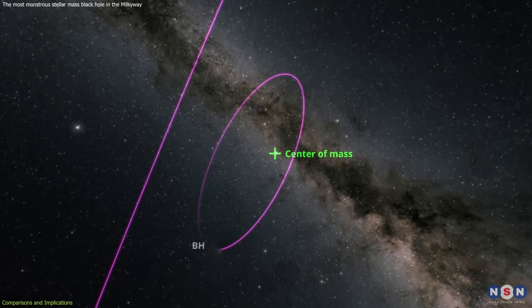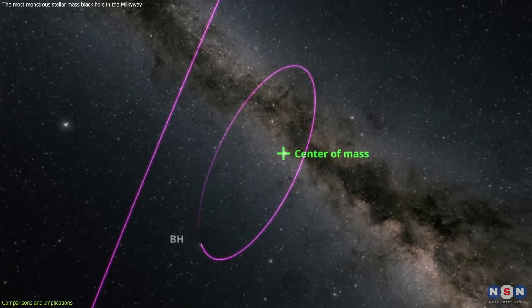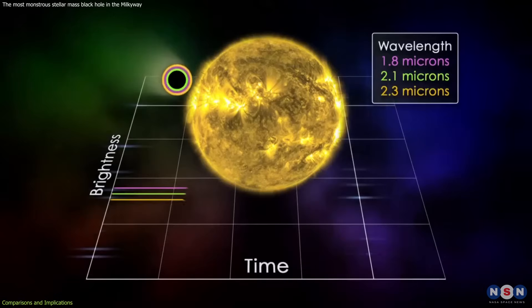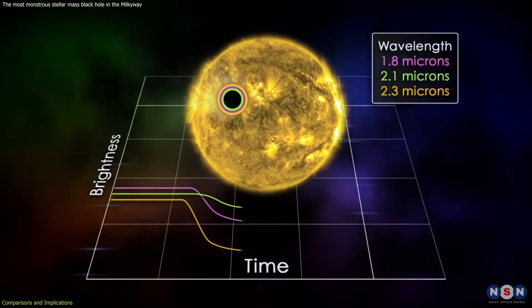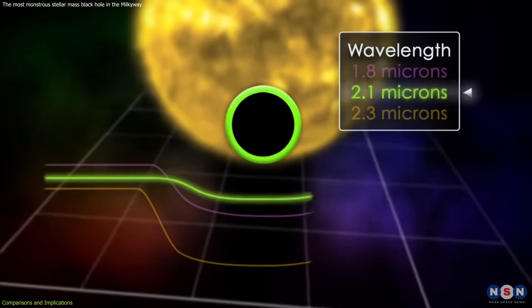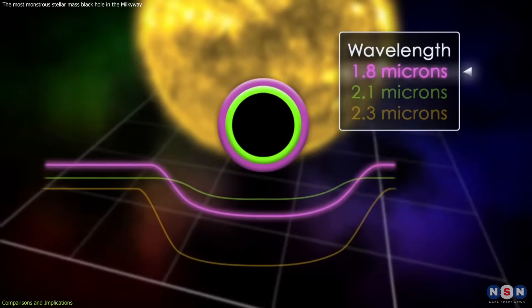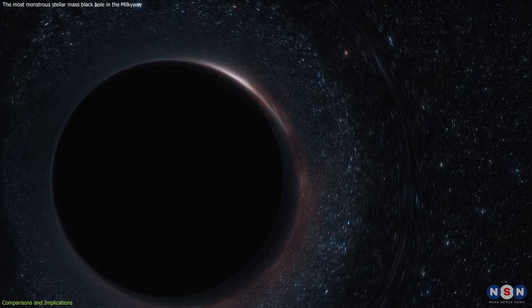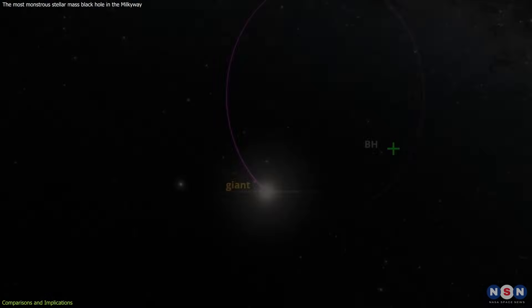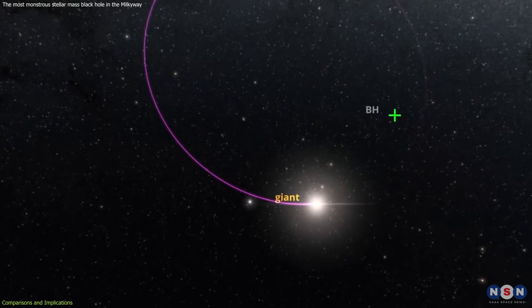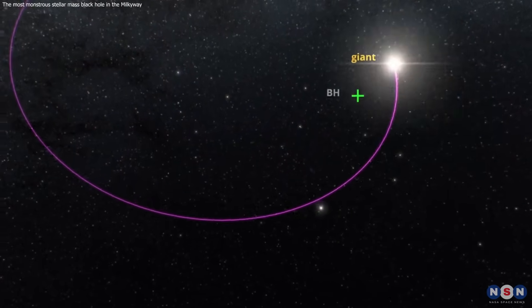This also underscores the importance of indirect observation methods in astronomy. Just as the detection of exoplanets often relies on observing the dimming of a star as a planet passes in front of it, the detection of dormant black holes like Gaia BH3 relies on observing the subtle effects these massive objects have on their environment.